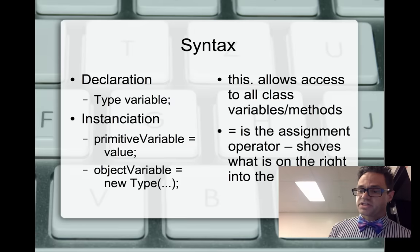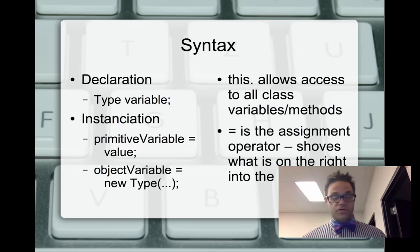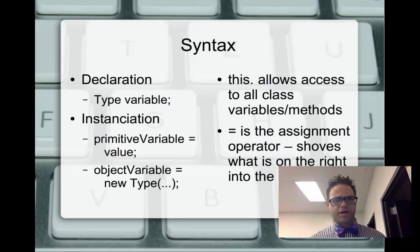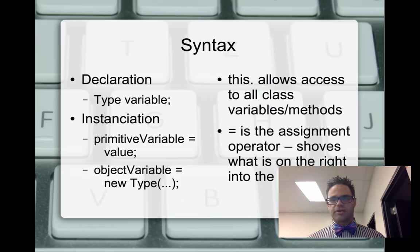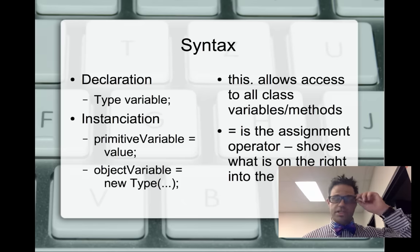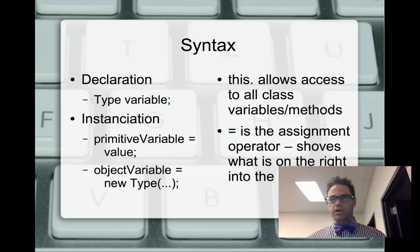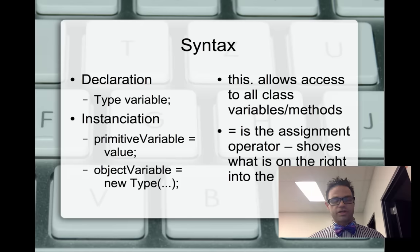First, we want to look at the idea of syntax in Java. We're going to be using Java as our language, so keep that in mind. If you have another language you're used to, that's great, but stick with Java. A declaration in Java always has a type and then a variable name, followed by a semicolon.